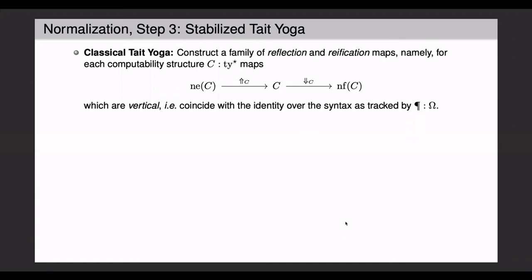So in the classical picture, Tait's method can be described as follows. So from a structure consisting of neutrals, one defines a map called reflection, giving us some piece of computability semantics. And then from this, via a second map called reification, we arrive at the normal forms. Both of these maps are supposed to be vertical, i.e. they should coincide with the identity over the syntax, i.e. they should leave the syntax unchanged. Remember that this is tracked by a proposition in our internal language.